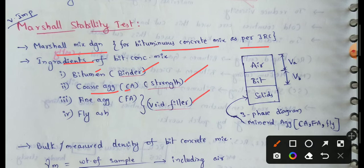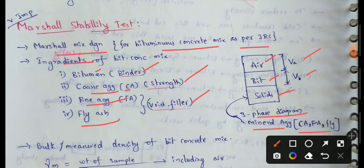We will use fine aggregate and fly ash as fillers as well. By planning this Marshall Stability Test, we will look at the 3-phase diagram. This includes: volume of air (Va), volume of bitumen (VB), and the solid mineral aggregates — that means coarse aggregate, fine aggregate, fly ash, etc.